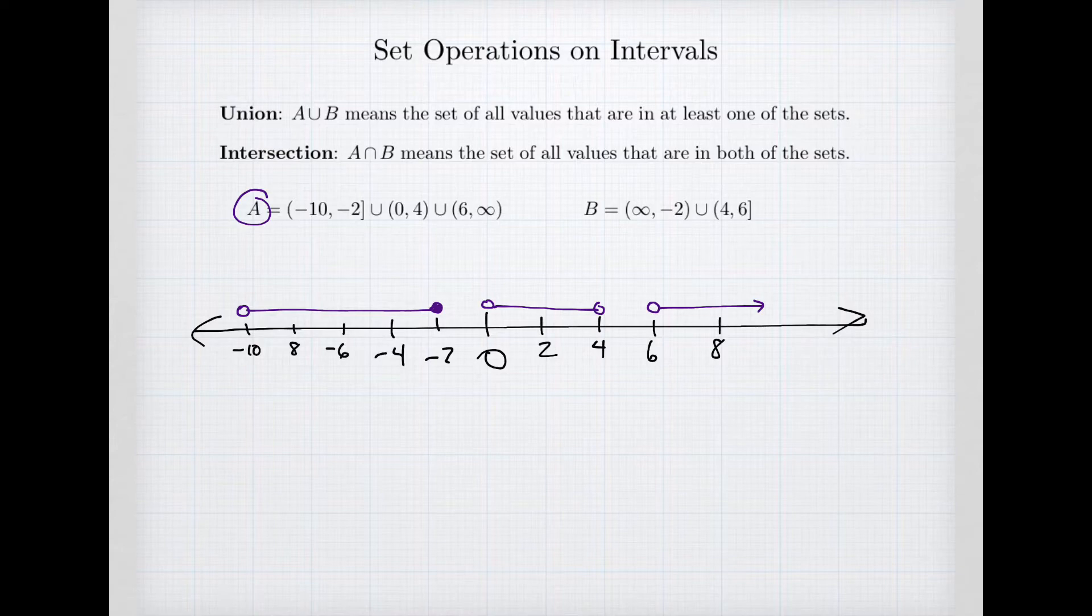All right, so now let's think about our set B. We'll choose a different color and I'm going to choose B to be orange. So B goes from negative infinity, so negative infinity and stops at negative 2 and not including that endpoint. And second interval that starts at 4 and ends at 6, so we start at 4 and we end at 6 and 6 is included.